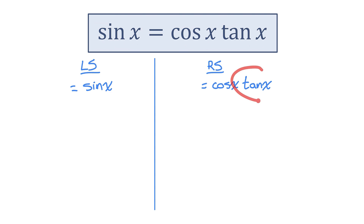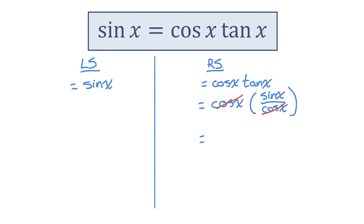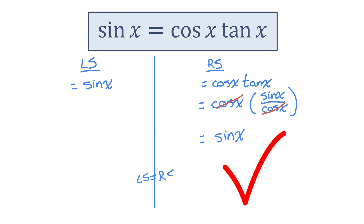I know that tan x is always equal to sin x over cos x based on the quotient identity. Now that I've replaced tan with sin over cos, I see that I have a factor of cosine being divided by a factor of cosine. I can cancel those factors out, and on the right my expression is equivalent to a sine function. Left and right are the same — this is an identity. Left side equals right side.